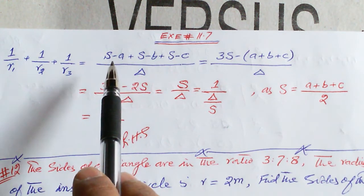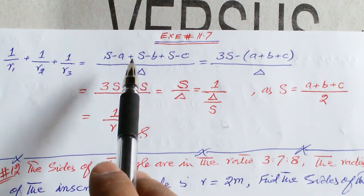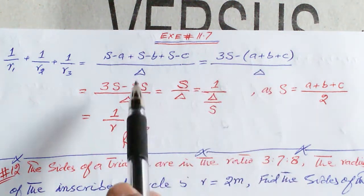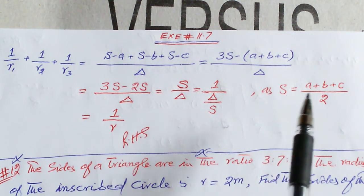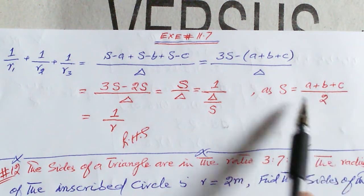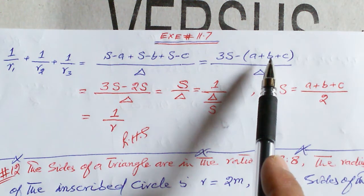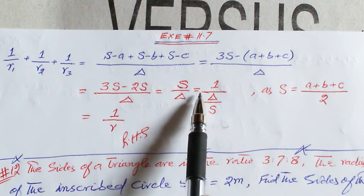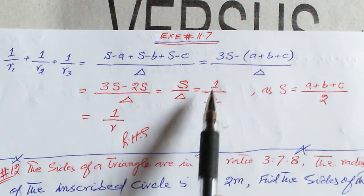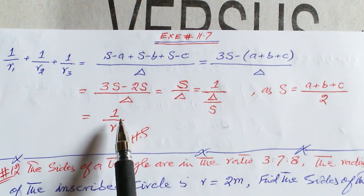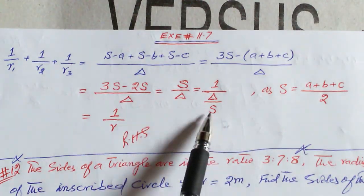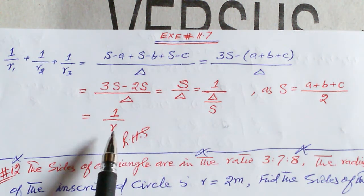Taking Δ as the common denominator, after addition we get (s−a + s−b + s−c)/Δ = (3s − (a+b+c))/Δ. Since s = (a+b+c)/2, we have a+b+c = 2s, so this becomes (3s − 2s)/Δ = s/Δ = 1/(Δ/s) = 1/r, where r = Δ/s is the radius of the inscribed circle. Hence proved.